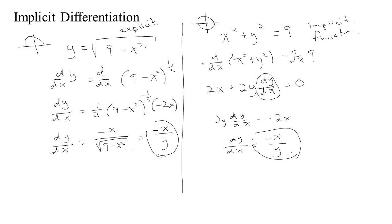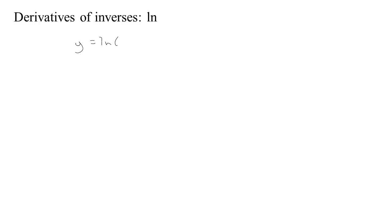This implicit differentiation technique is really powerful, and it can help us solve a lot of problems. In particular, it can help us take the derivative of functions that are inverses of functions whose derivative we already know. Here's an example: suppose you want to find the derivative of the natural log. So let's set y equal to natural log of x, and then our task is to find dy/dx. Right now, it's an explicit function, but what this is saying is that y is the natural log of x — that means y is the exponent you put on e to get x, or in other words, e to the y is x.